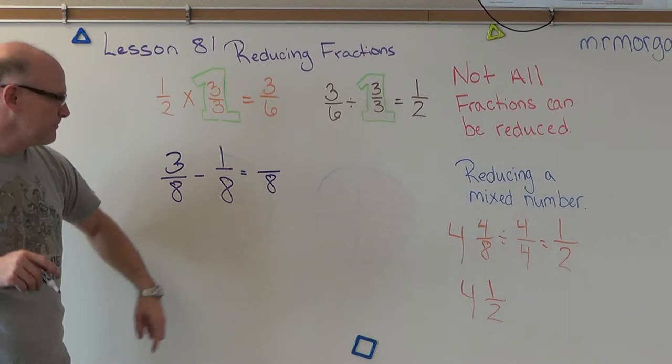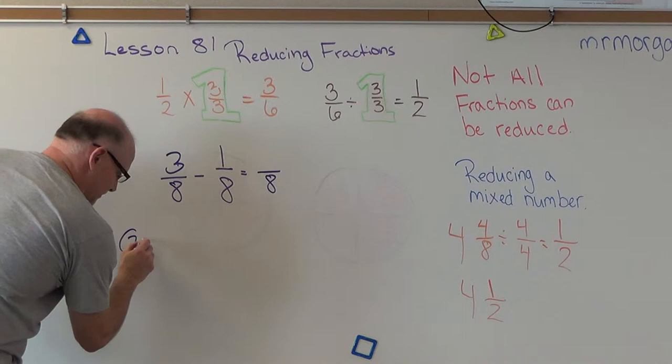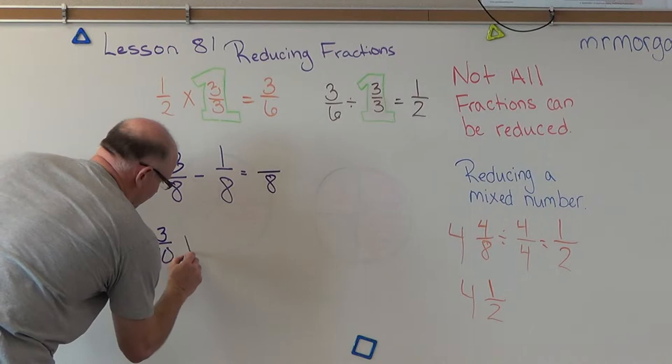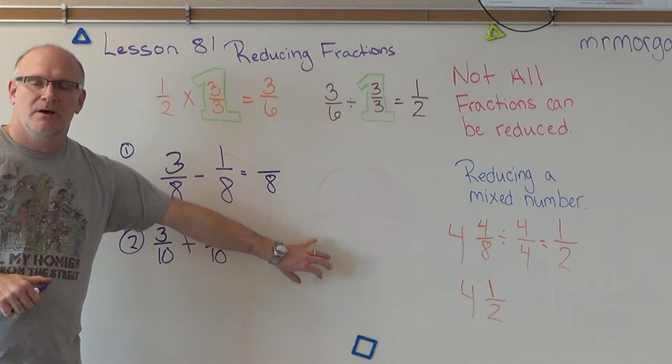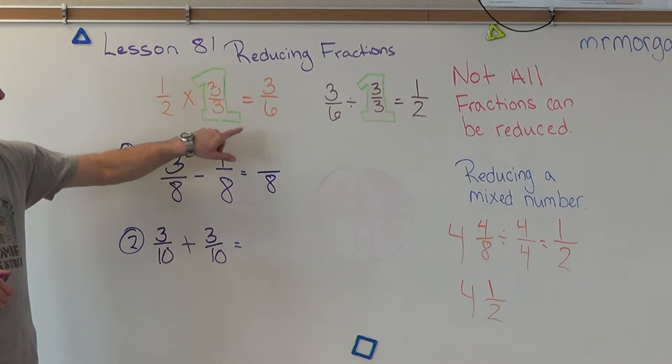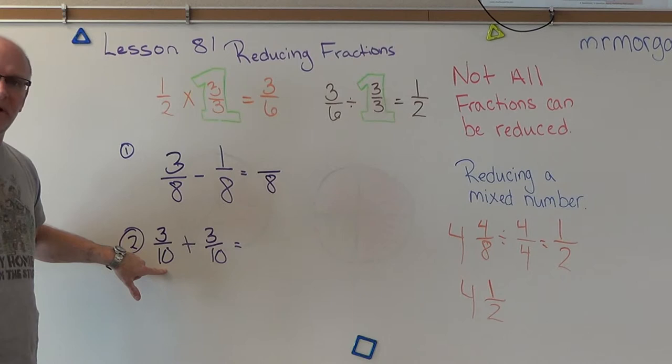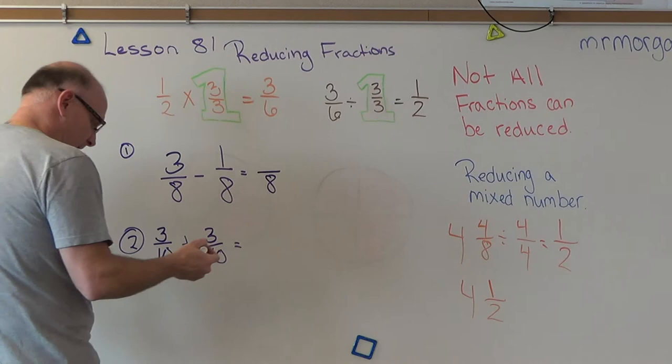Number two: 3/10 plus 3/10. Get your answer and then reduce it. You'll have an answer and then the reduced one. Remember dividing, just like we were doing up here. And remember adding and subtracting - the denominator stays the same, it doesn't change. You're just adding or subtracting the top number.